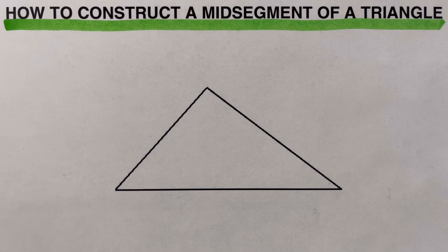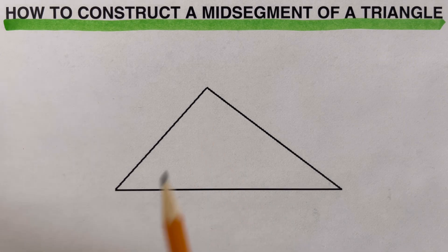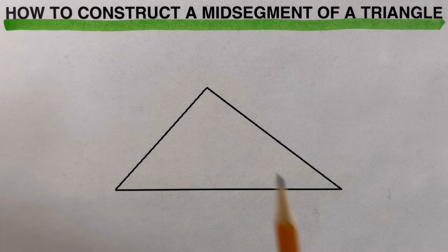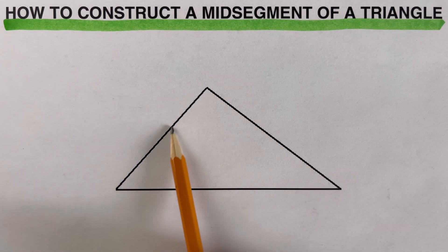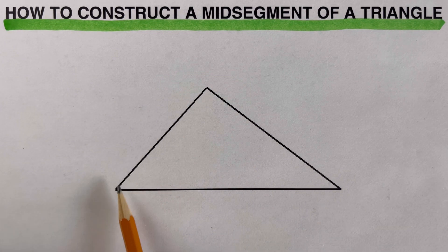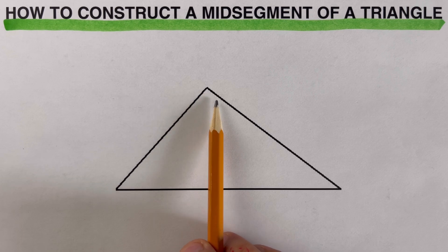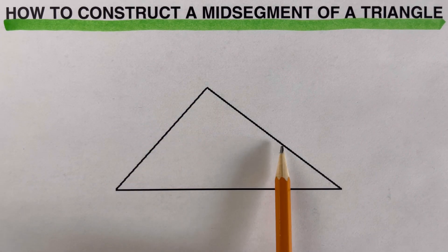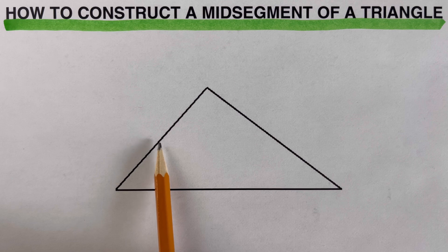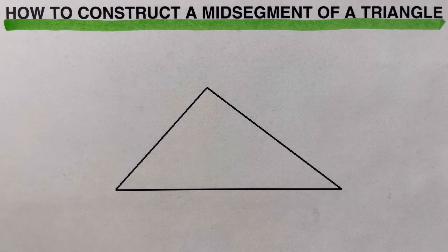So given this triangle right here, we're going to create a mid-segment. We're going to use only two sides of the triangle and determine the mid-points of these two sides. I will show you how to determine the mid-point of this side of the triangle and the mid-point of this side, so that we can create the mid-segment — that's the line that connects the two sides of the triangle.